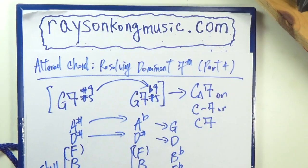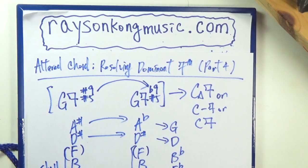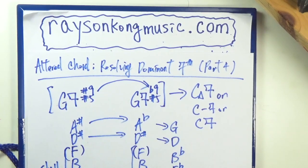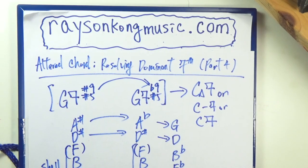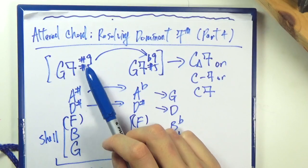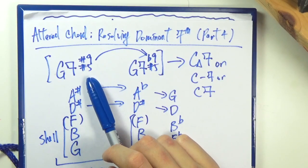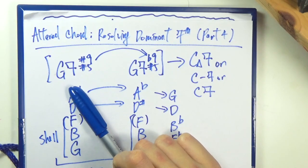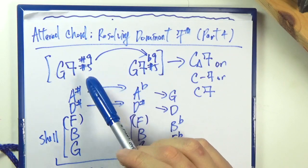Hello everybody, we'll talk about another use case of altered tensions in altered chords today. We'll focus on G7 sharp 9 sharp 5, so there are two tensions, and one very common use case of this chord.